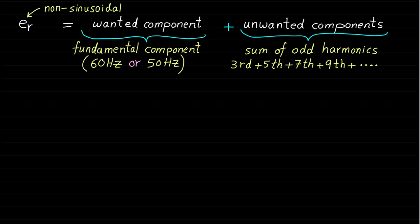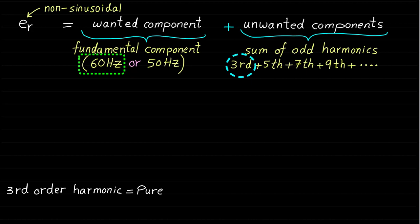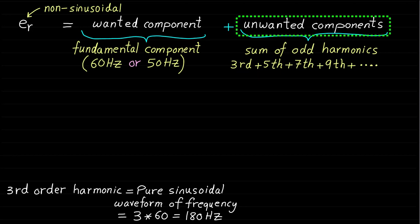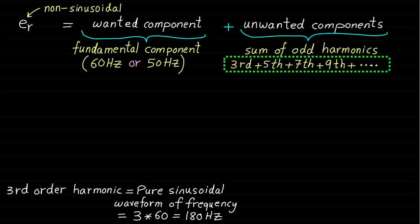For example, if the fundamental frequency is 60 Hz, then the 3rd order harmonic is a sinusoidal waveform component with a frequency equal to 3 times 60 Hz, equal to 180 Hz. It is worth mentioning again that the unwanted harmonic components of the trapezoidal waveform contain only odd-order harmonics.